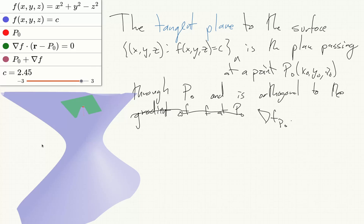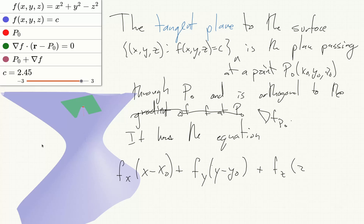So it has equation f_x times (x minus x0) plus f_y times (y minus y0) plus f_z times (z minus z0), where these are the partials of f evaluated at x0, y0, z0, evaluated at p0.